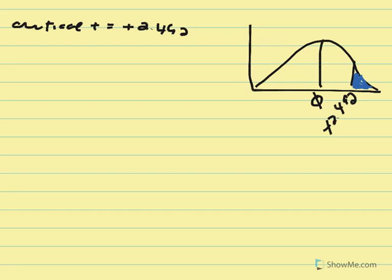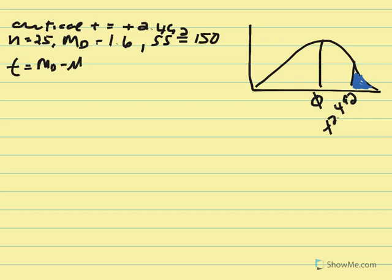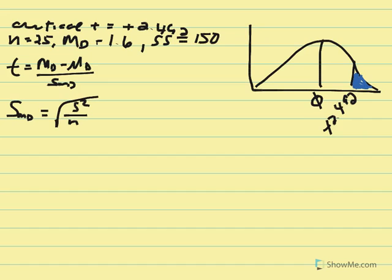We calculate our t value: sample mean difference minus the hypothesized population mean difference over the estimated standard error of the mean difference. Since we have SS, we use variance. Variance equals SS over degrees of freedom: 150 divided by 24 equals 6.25. Then the estimated standard error equals the square root of 6.25 over 25.